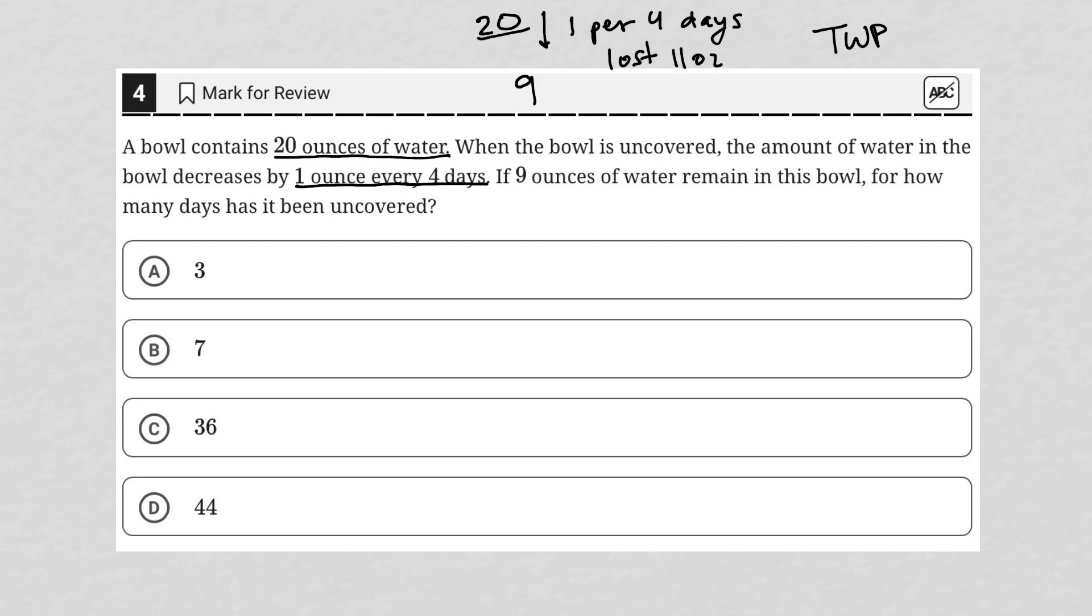Okay, but we know that it loses one ounce per four days, which means in order to lose 11 ounces, this bowl must have been uncovered for 44 days. Because four days for one ounce would equate to 44 days for 11 ounces.